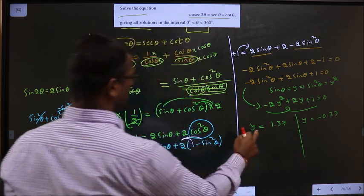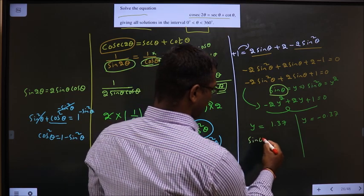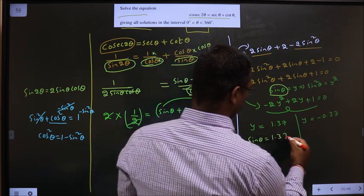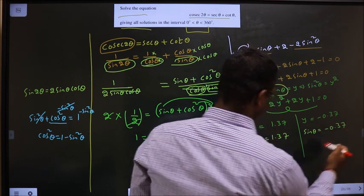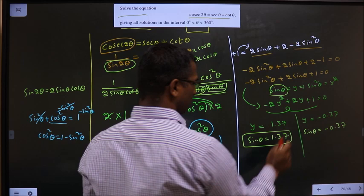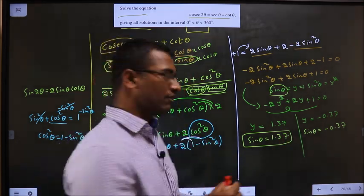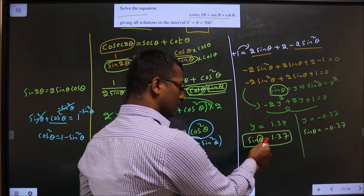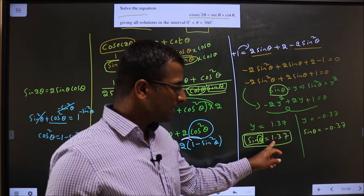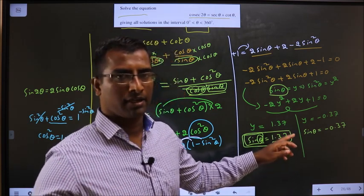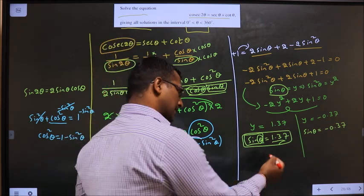It is not yet over. Y is nothing but sin θ. So sin θ equal to 1.37 and sin θ equal to minus 0.37. Now see for this one: no matter what value you take for θ, sin θ has to lie between minus 1 to plus 1. This value is beyond 1. That can never happen. From that, conclusion is rejected.